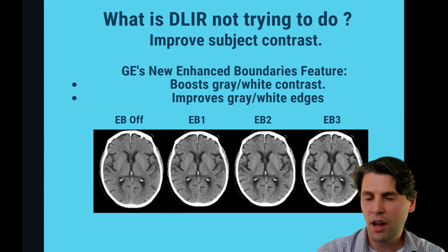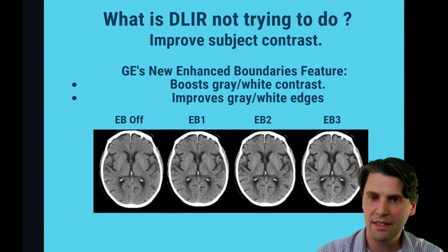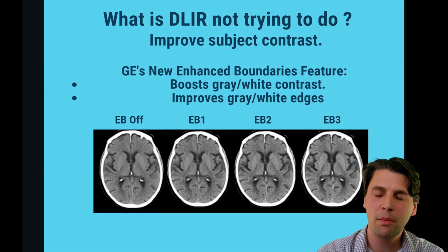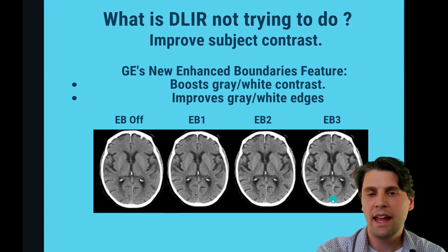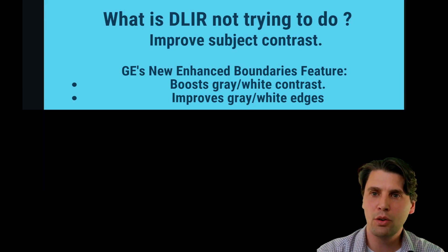Finally, I want to summarize and clarify what we're not trying to do here. With the deep learning network currently, we are not trying to modify the physics of the system, and we are also not trying to change the contrast. The network for deep learning on the system today is trying to estimate and reduce the image noise — we're not trying to change the contrast in the image. There are methods to modify the contrast as well as the edge definition between gray and white matter. One recently introduced by GE Healthcare is called enhanced boundaries, where you can see the CT number difference between gray and white matter is more accentuated and the boundaries are better visualized with the new EB3 option.